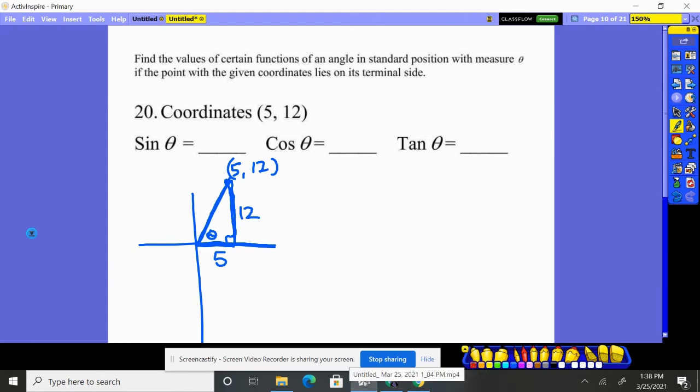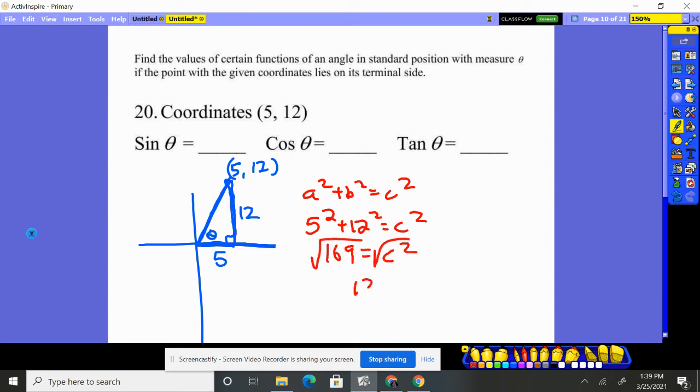All we now need is the hypotenuse. So how do you find the hypotenuse of a right triangle? A squared plus B squared equals C squared. So 5 squared plus 12 squared equals C squared. 25 plus 144 is 169. And that's a perfect 13. So 13.